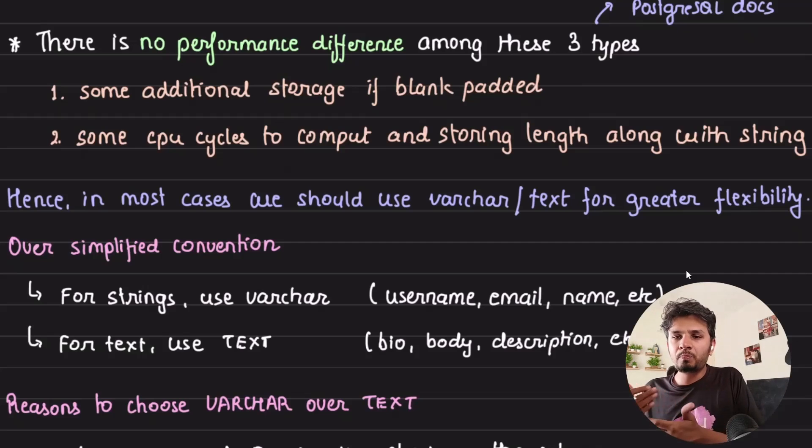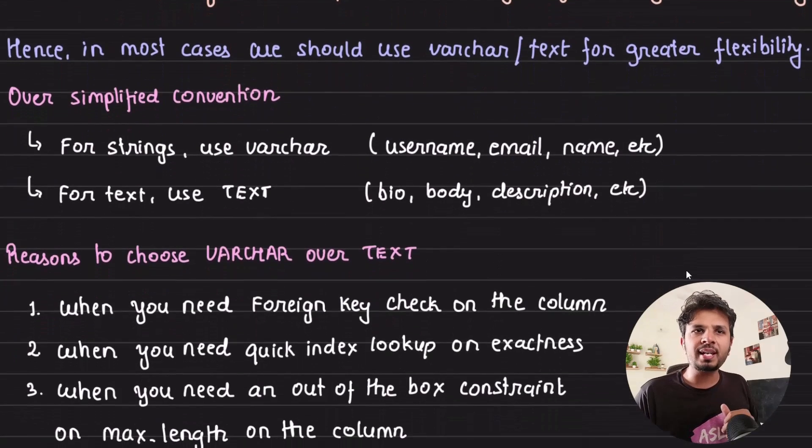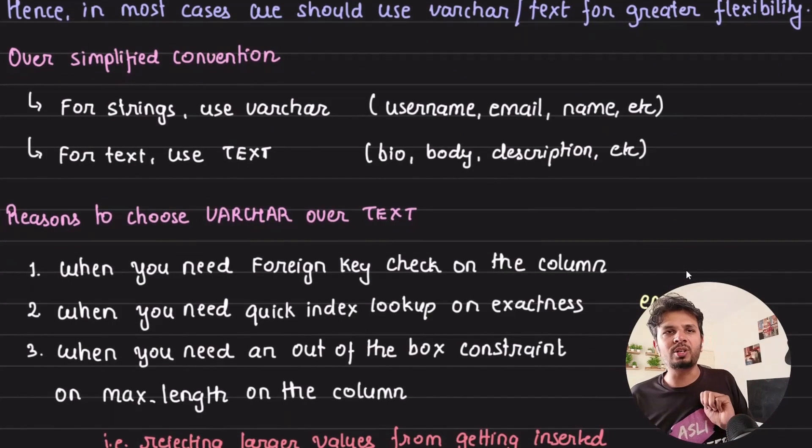And for larger blob of body like bio, body, blog body, description, you go for text. But there has to be a reason, because if text gives you everything, there has to be a reason for you to choose varchar. So to choose varchar over text, three things you can go for.